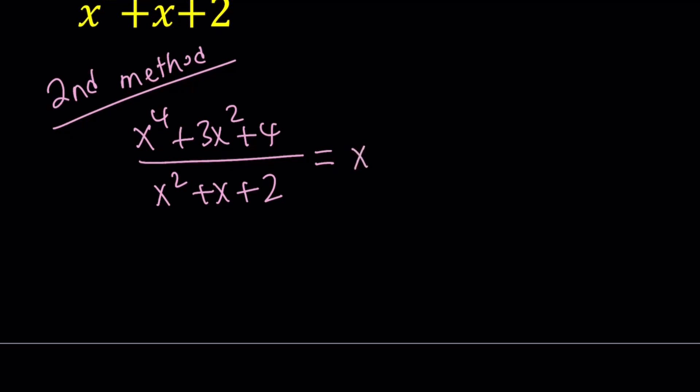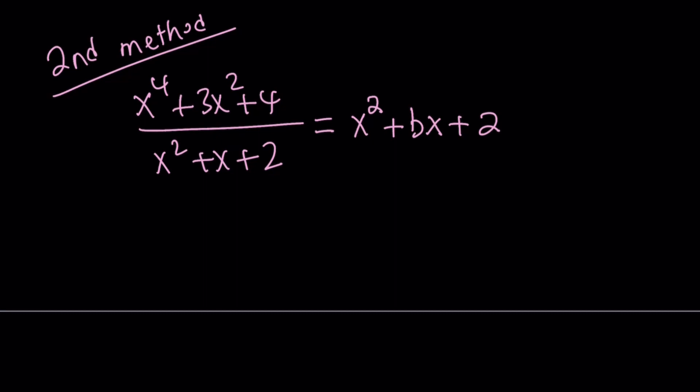So we expect to get something like x squared plus ax, bx, whatever you want to call that. There's an x term, and there's a constant. But if you look at the 4 and the 2, the constant has to be a 2, because 2 times 2 equals 4. You can only get a constant by multiplying constants if you're dealing with polynomials.